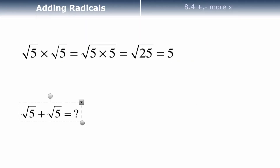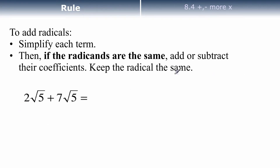If I'm adding radicals, you have to think of it as being different than multiplying. When you multiply radicals, the product rule says if you're multiplying two radicals, you can take the square root of the product of those two inside. If you're adding radicals, here's the rule: to add radicals, simplify each term if you can — like if there's a radical that says root of 16, you probably want to make that 4. Then if the radicands are the same, you add or subtract the coefficients, the numbers out front, and keep the radical the same.